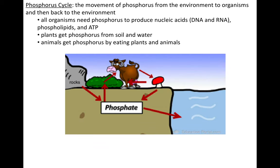Let's talk about the phosphorus cycle. Why is phosphorus important? DNA and RNA, phospholipids in your cell membranes or plasma membranes, and energy — ATP, where that P stands for phosphorus. How do plants get their phosphorus? They get it from soil, dissolved in water. The usable form is generally a phosphate, which is the one that dissolves in water. You and I get our phosphorus by eating.